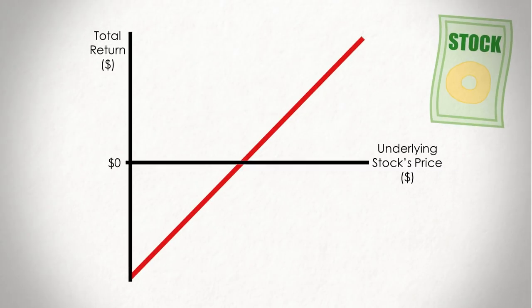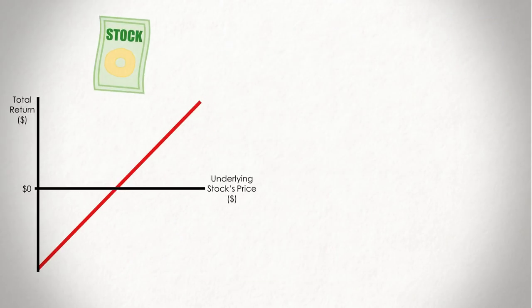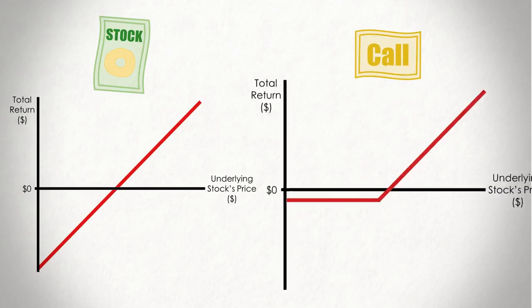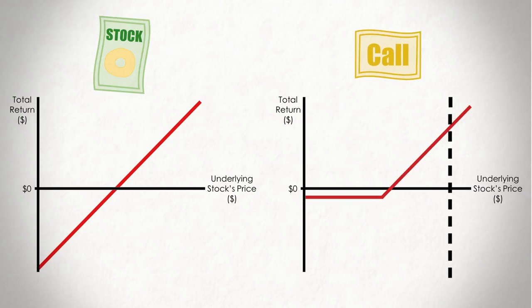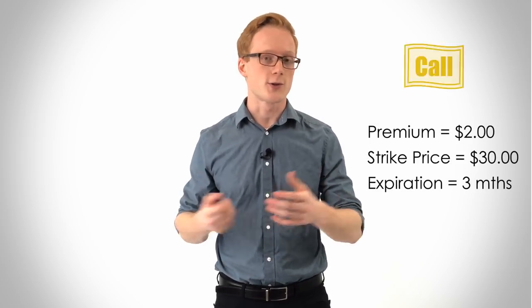The first thing we want to do is to somehow replicate the upside of the stock, the right side of the graph pointing upwards. This is easy enough to do if we buy a call option, a security that earns you money if the stock's price increases. Now, I'm not going to focus too much on the numbers here, but they are important.